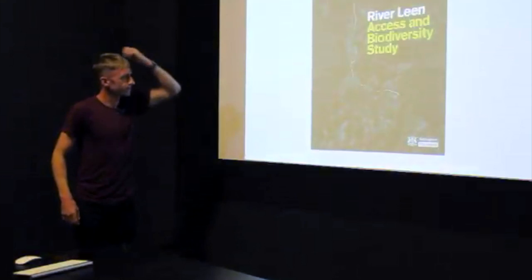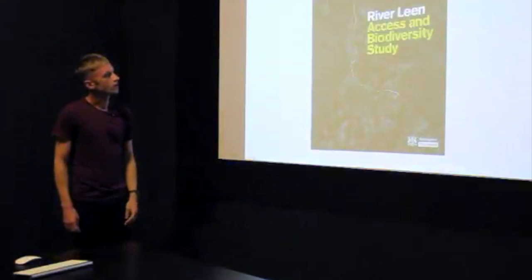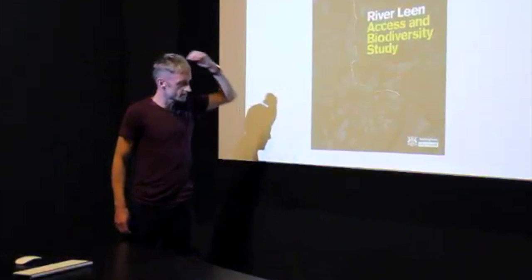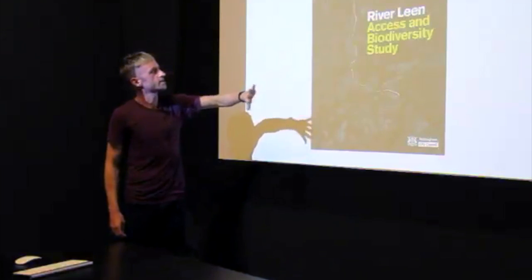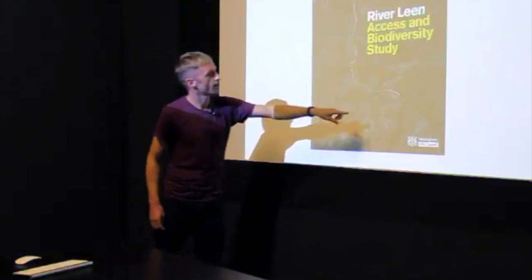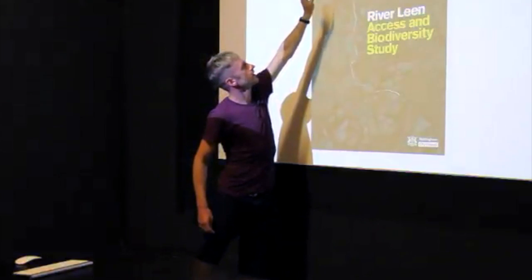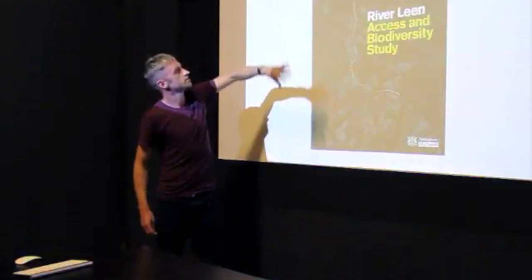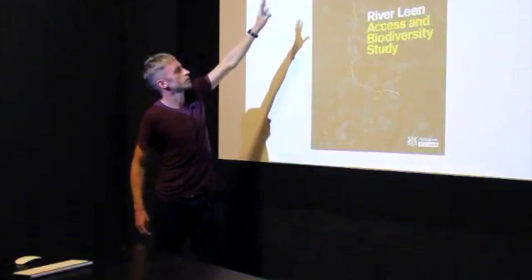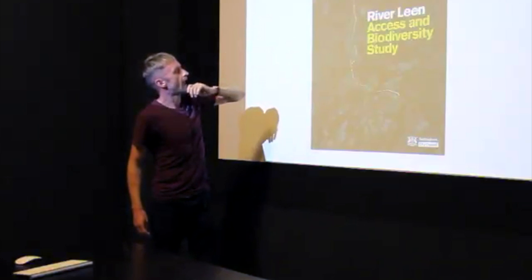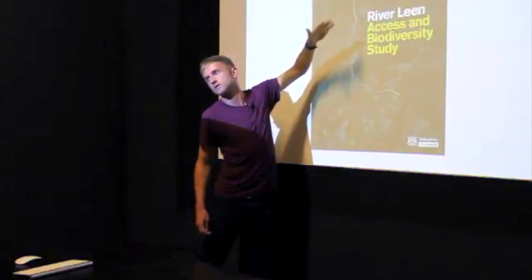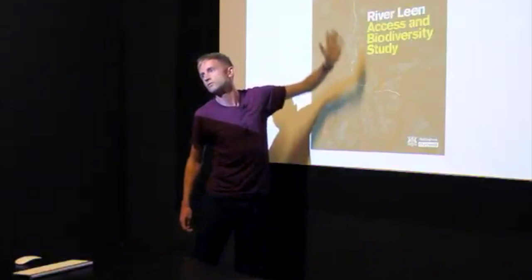This is the plan that the council have done, a few years ago. It's called Access and Biodiversity Study. Basically the idea is, here's the Leen, it goes from north to south through the city. About six miles long within the city, 14 miles long in total. The idea is to join up lots of different footpaths and cycle paths.